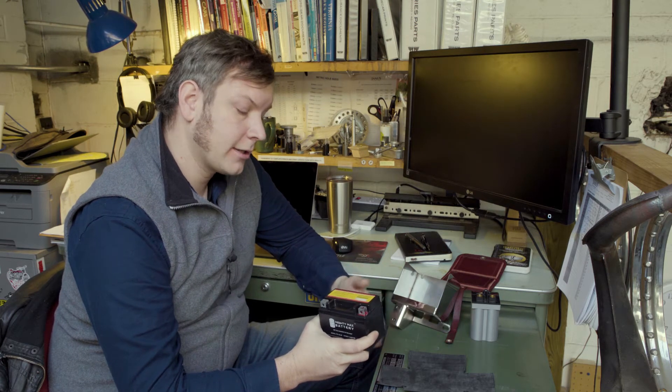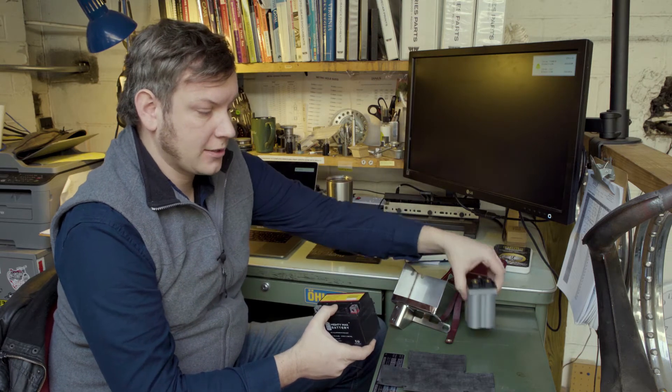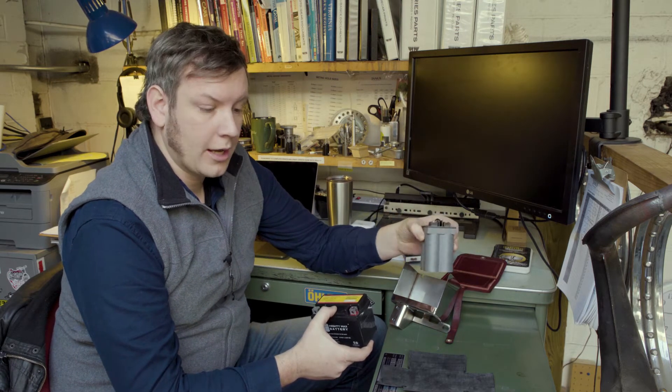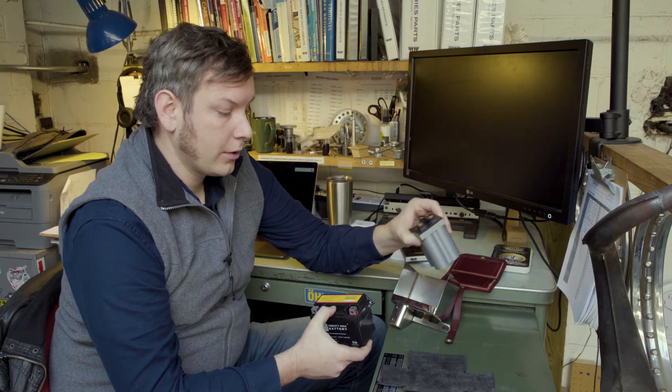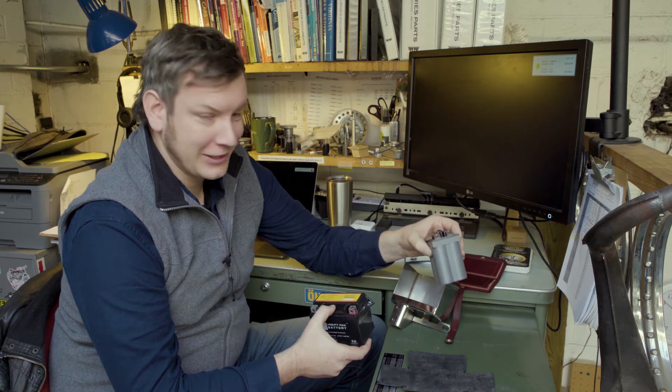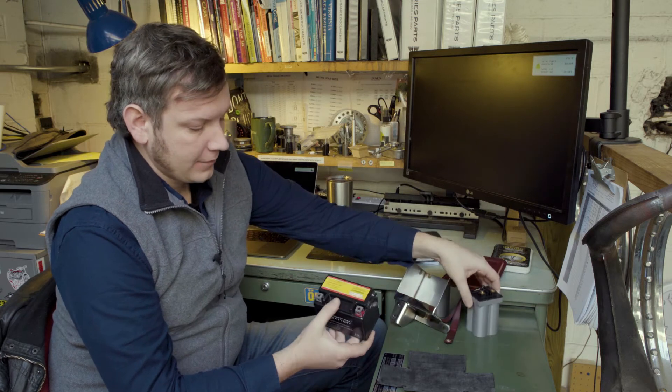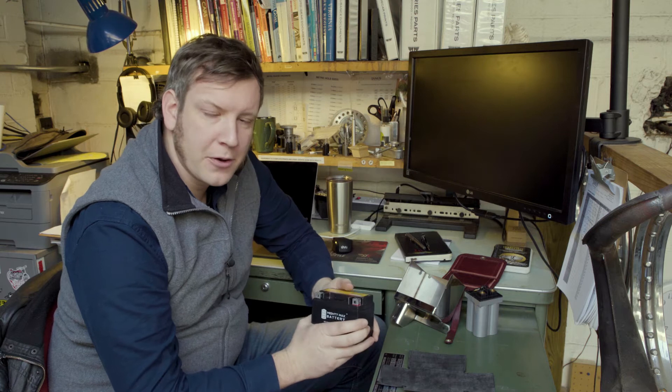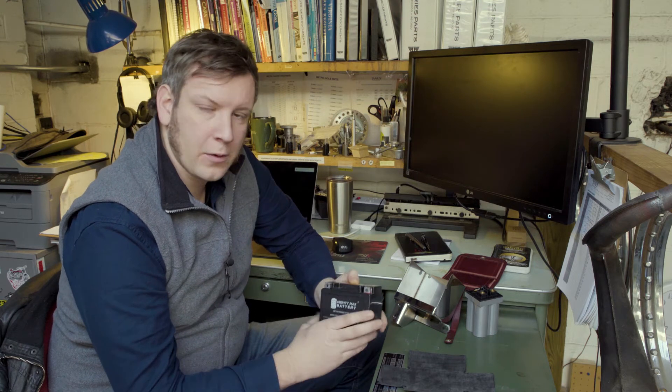The lead acid batteries do require some maintenance over the winter. If you are storing the bike, you will want to put this one on a trickle charger, as opposed to the lithium ferrous, which has almost no loss of charge over periods of time. This one will require some maintenance, but it's maintenance that most motorcyclists are familiar with, and the equipment is very cheap.